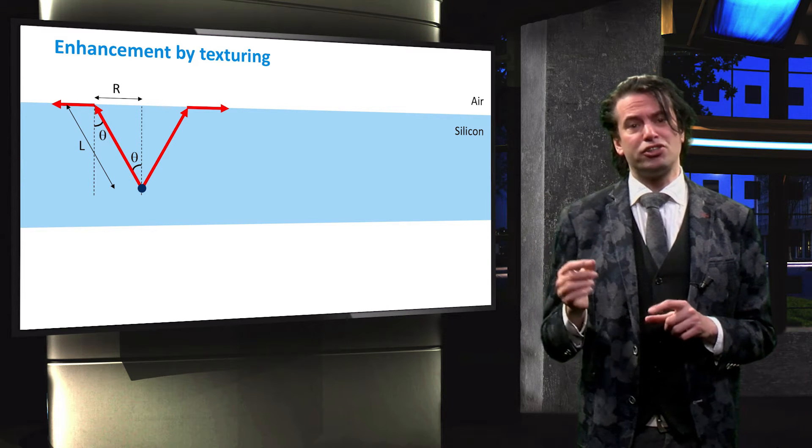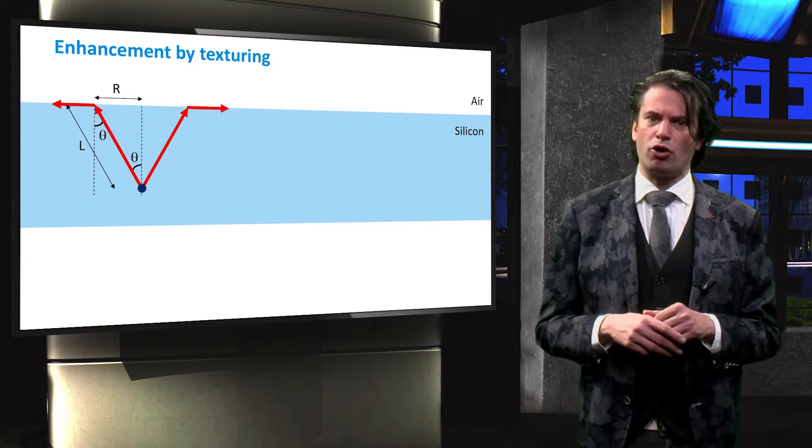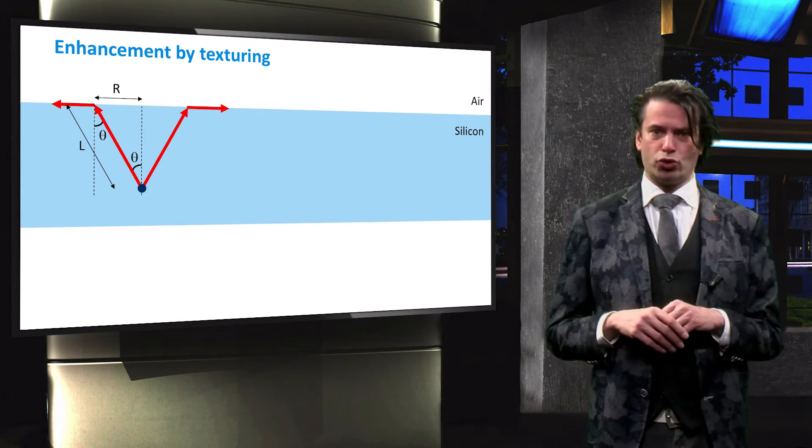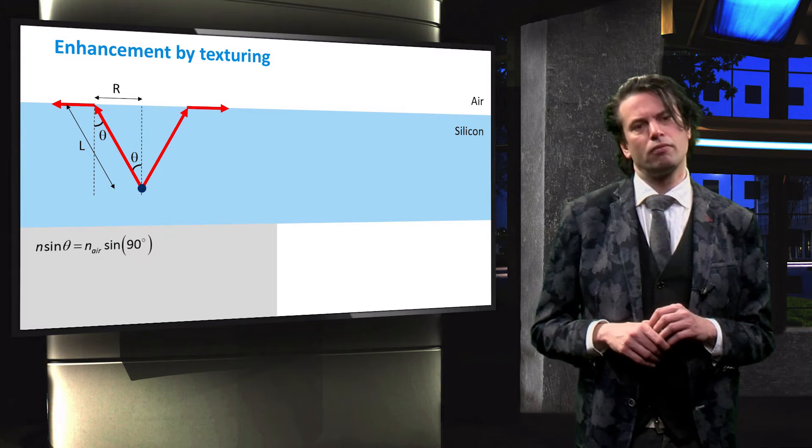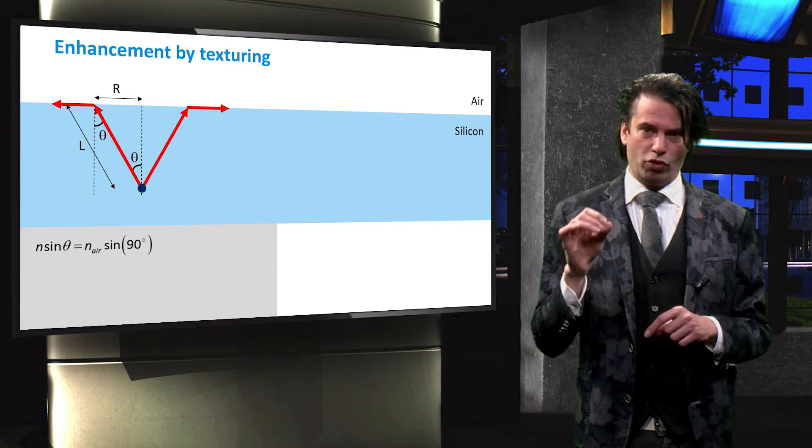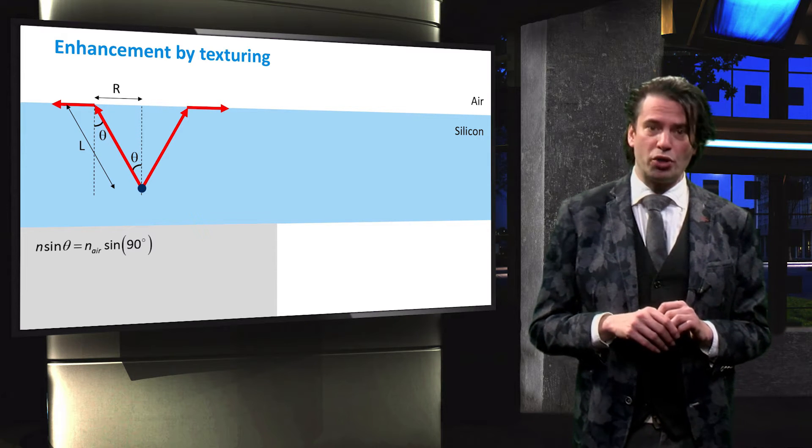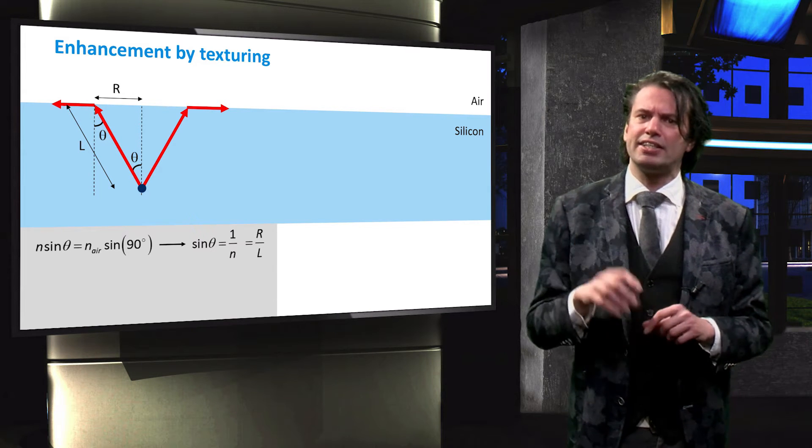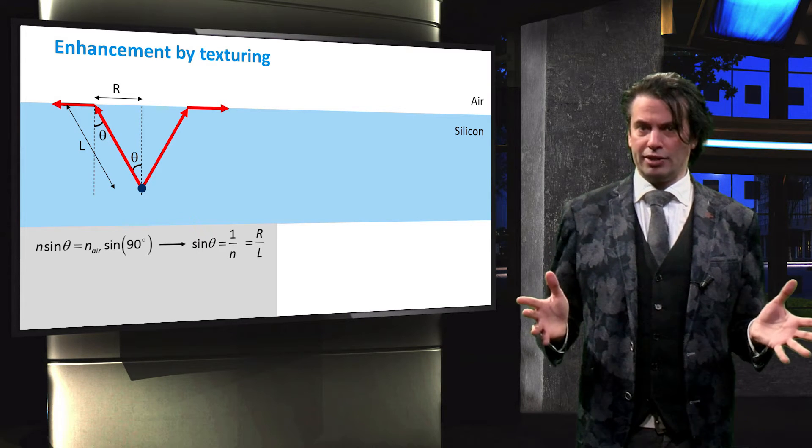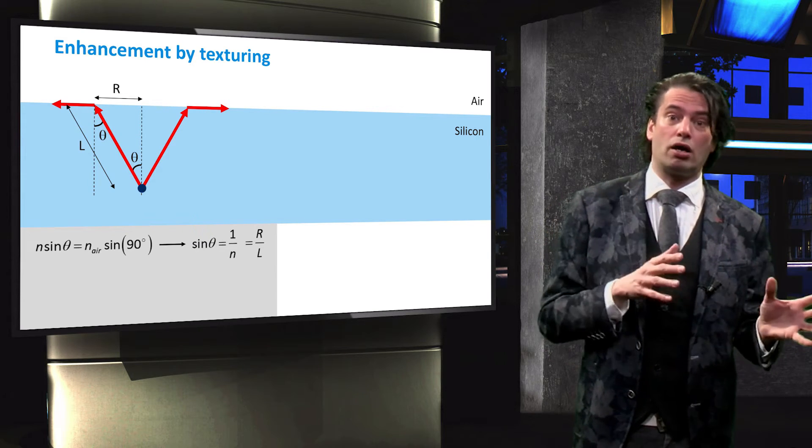We now introduce the distance R and L. L in this figure equals the maximum path length of the light reaching a point. R equals the distance from the normal to the point where L meets the surface of the solar cell bulk. We apply Snell's law to calculate theta, the maximum angle of incidence. The refractive index of air is 1 and the sine of 90 degrees also equals 1. We therefore find that the sine theta equals 1 over the refractive index of the bulk material. And since we have a right angle triangle, sine theta also equals R over L.